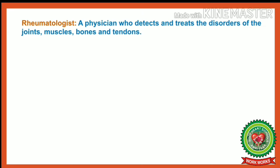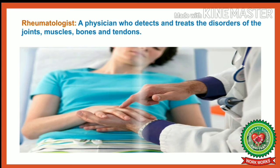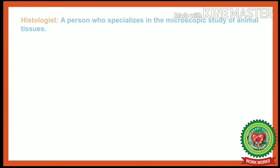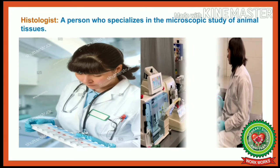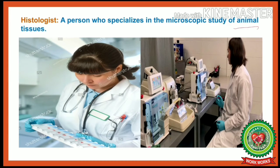Next is rheumatologist. A physician who detects and treats the disorders of the joints, muscles, bones, and tendons is called a rheumatologist. The next specialist is histologist — a person who specializes in the microscopic study of animal tissues is called a histologist.